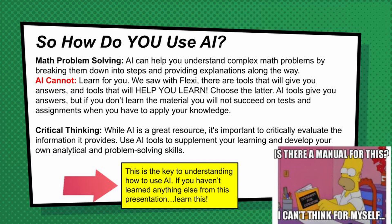As I showed with the Flexi example, AI can be like an overpowered calculator, which won't help students learn — it will just give them answers. If students use it to help understand how to do their math, that's excellent. If they use it to just get the answer, that's not helpful, because they haven't learned it. When they have to demonstrate mastery of a topic, they won't be able to answer on a quiz or test. The most important thing students need to know is that AI is a great resource, but they must critically evaluate all the information it provides. It's a tool to supplement learning, not a replacement for putting in the work.